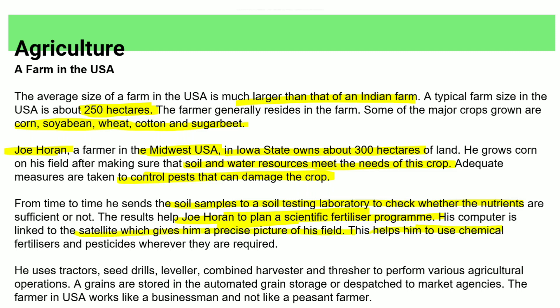Joe Horan uses chemical fertilizers, pesticides, tractors, seeders, and levelers — many machines. He stores grain in silos. He works like a businessman and not like a peasant farmer.